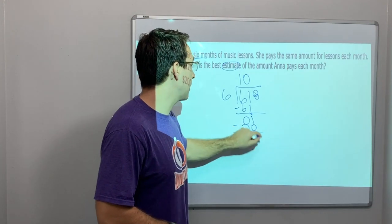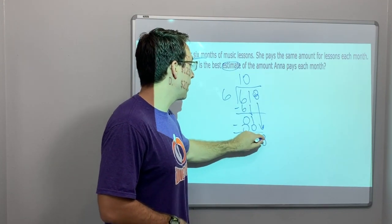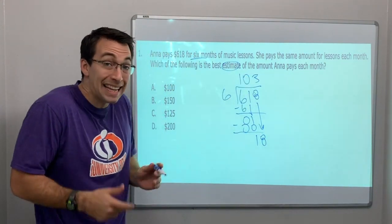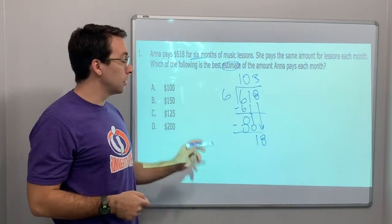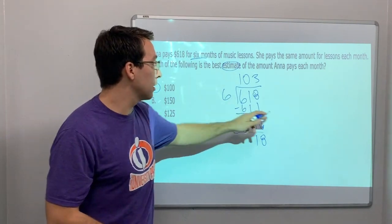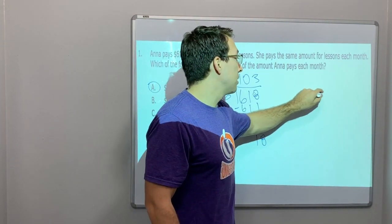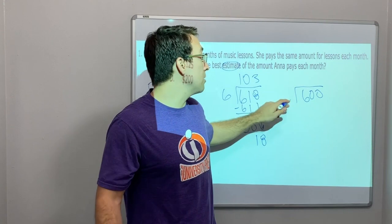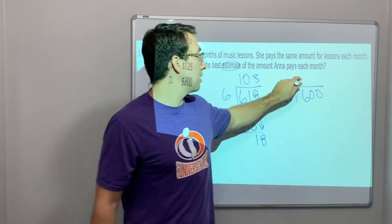Eighteen, that's the exact amount she pays each month. I would say that is about a hundred dollars. Look at this: 618 rounded to the nearest hundred divided by six is one hundred.